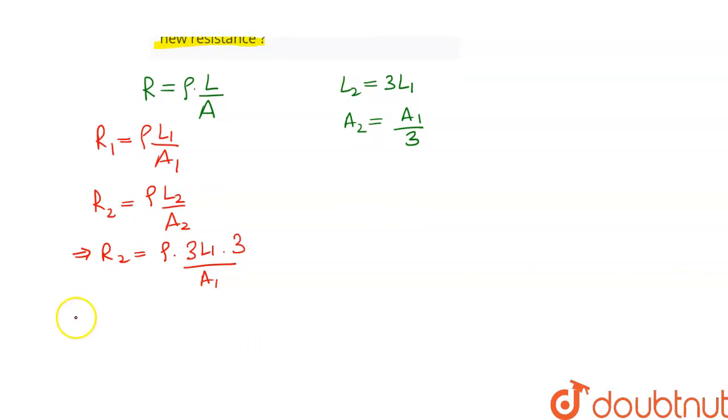This can be written as R2 is equal to 9 times rho L1 upon A1. We can see that rho L1 upon A1 is equal to R1. So let us substitute the value.